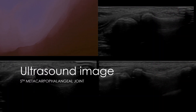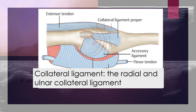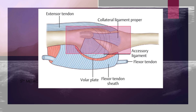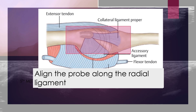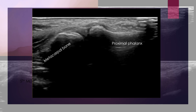Here is the ultrasound image of the fifth metacarpophalangeal joint. The radial and ulnar collateral ligaments of the metacarpophalangeal joints are primary stabilizers of MCP joints. I place the ultrasound probe along the radial collateral ligament. The left side is the metacarpal bone, the right side is the proximal phalanx. White arrows indicate the radial collateral ligament.